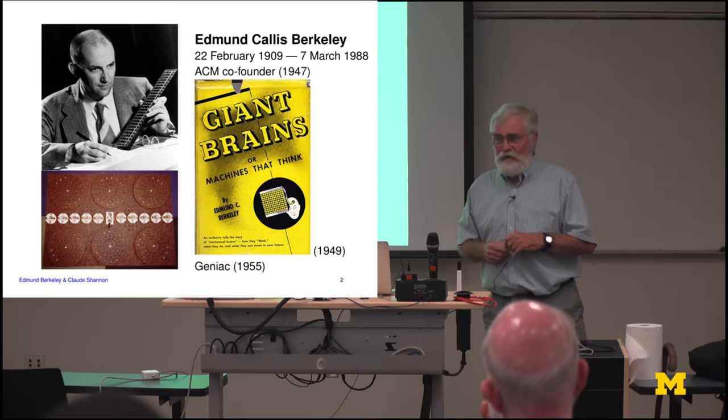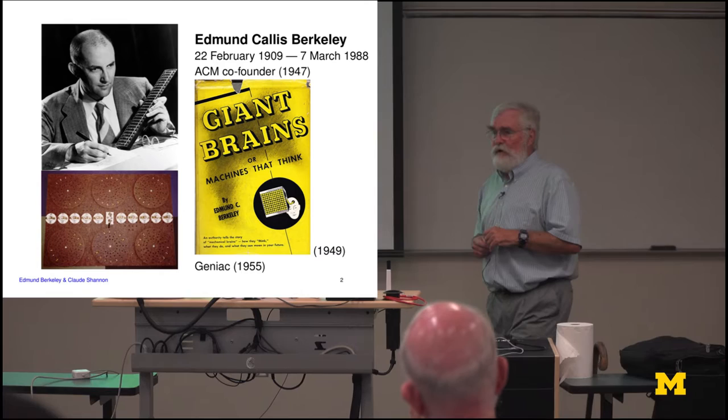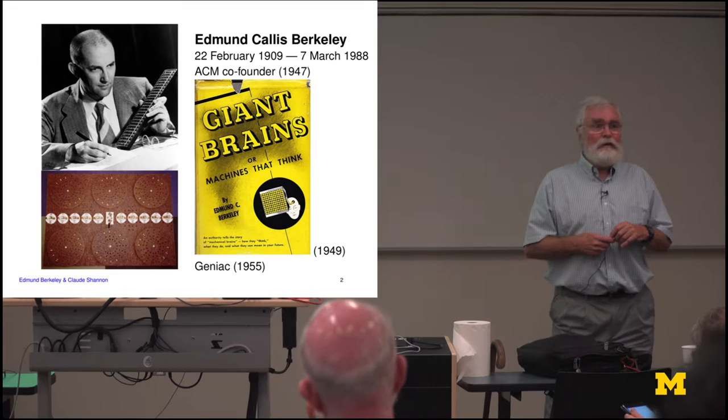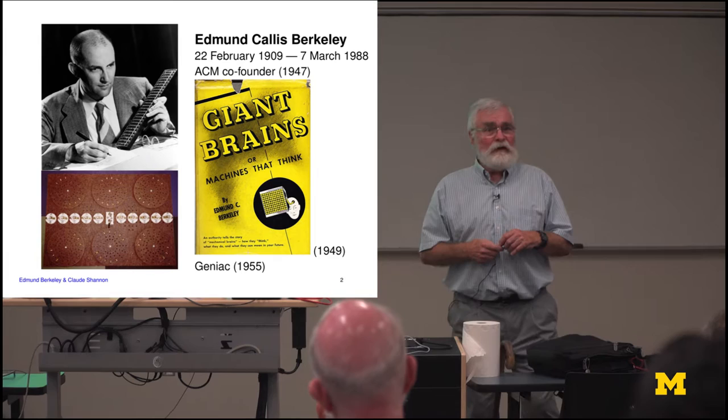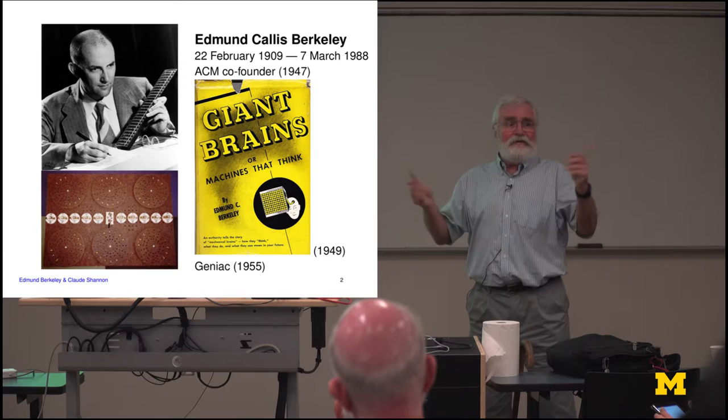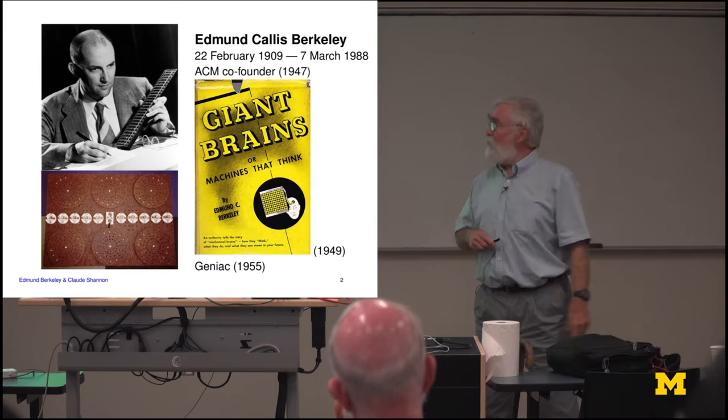Very much into computer science, he wrote a book called Giant Brains, and that book in 1949 talked about what was then the first Boolean algebra-based computer, based on a paper from a master's thesis written by Claude Shannon. The main story here is that there's a mythology that Shannon wrote this wonderful paper and everybody immediately adopted it, fundamentally changing computers from then on. It actually took about a decade for that to happen, and Berkeley was one of the main reasons it did.